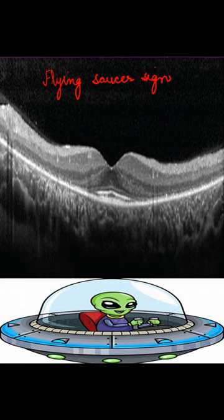This black part is your outer nuclear layer. The outer nuclear layer normally should extend in the entire retina, but here, if you can see, it is present only in the central foveal region. In the periphery, it seems to have been attenuated.